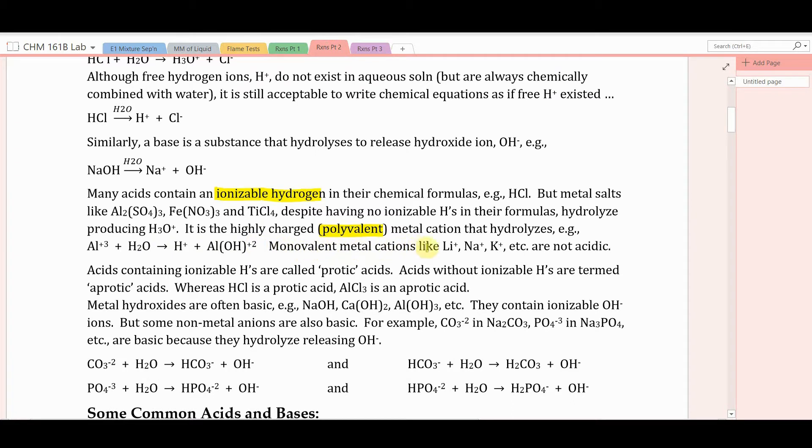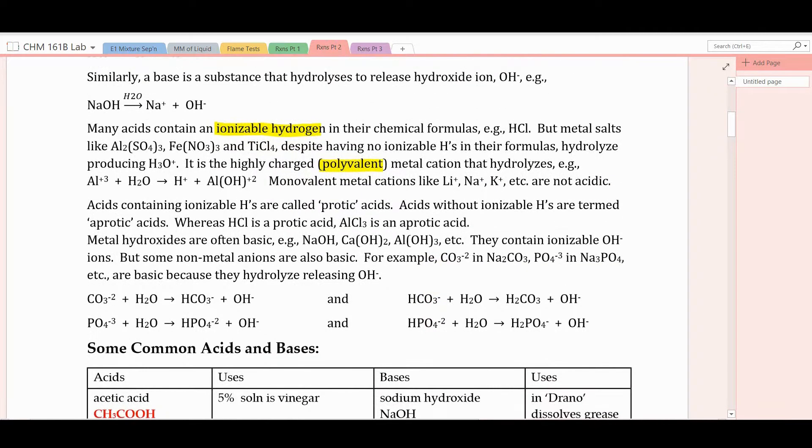Now, monovalent metal cations like lithium, sodium, potassium, they're really not acidic at all. They need to be polyvalent to have this effect. Acids containing ionizable hydrogens are called protic acids. Whereas acids without ionizable hydrogens are called aprotic acids. So HCl is a protic acid. Aluminum chloride is an aprotic acid.